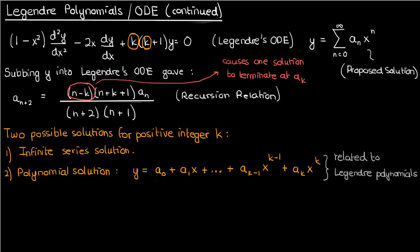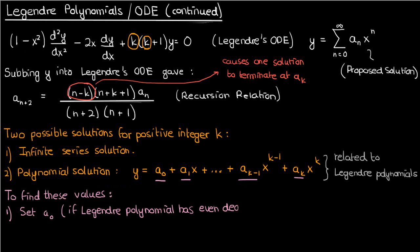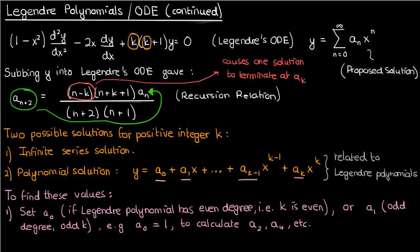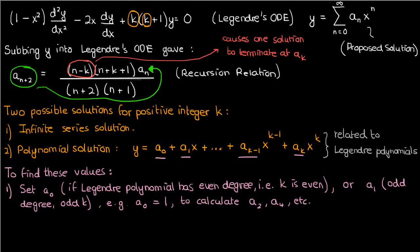To find the numerical values of the polynomial coefficients a_0 through a_k in the Legendre polynomial, we can do one of two things. The first technique is to set an initial coefficient like a_0 or a_1, depending on whether the Legendre polynomial has an even or odd degree. After setting that value, we can calculate all subsequent coefficients like a_2, a_4, and so on, since every coefficient is related to the one two terms behind it in the recursion relation.